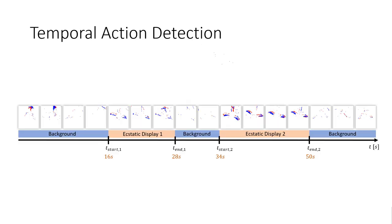The aim is to quantify this behavior to better understand it. We formulate the problem as a temporal action detection task, which is the computer vision task to determine every interval and label of actions in an untrimmed data stream — in this example, the start and end times of ecstatic display 1 and 2.